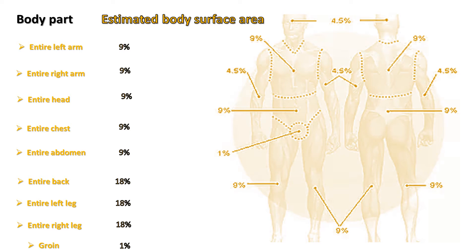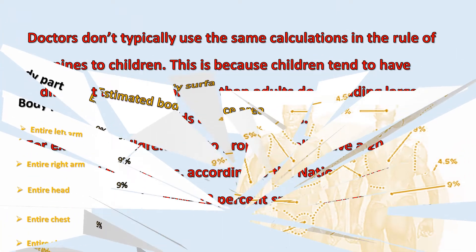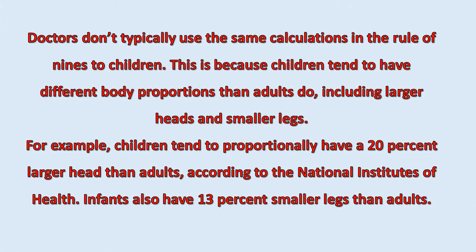These percentages are accurate for people over age 14. Doctors don't typically use the same calculations in children, because children tend to have different body proportions than adults, including larger heads and smaller legs. For example, children tend to proportionally have a 20% larger head than adults, according to the National Institutes of Health, and infants also have 13% smaller legs than adults.